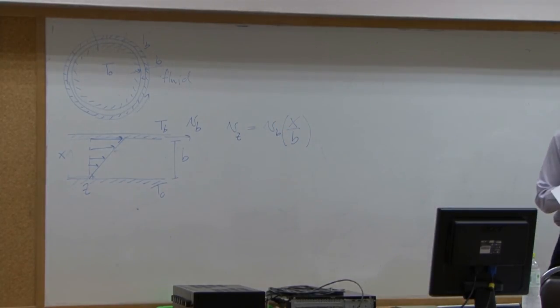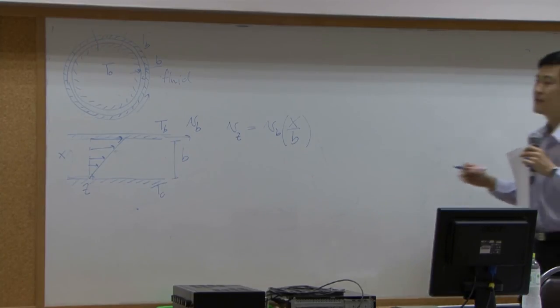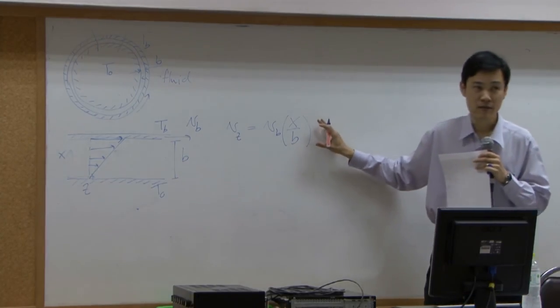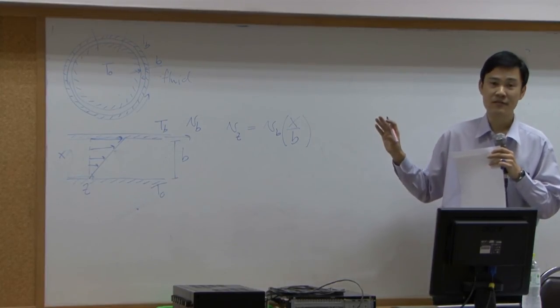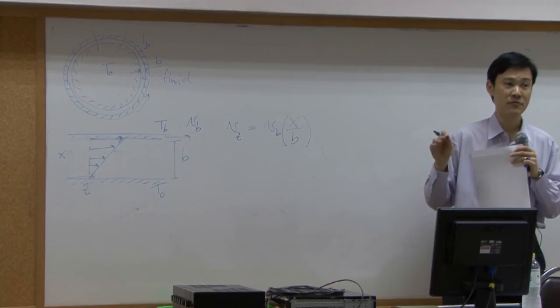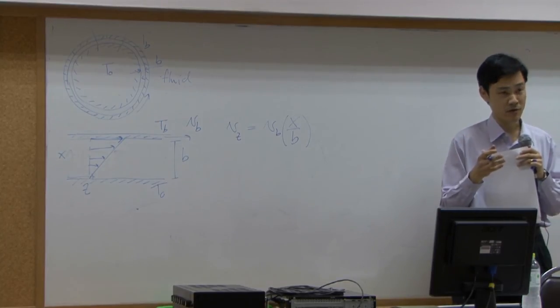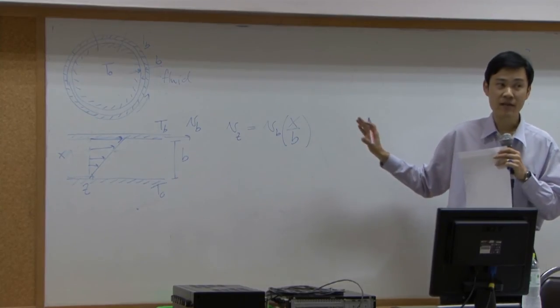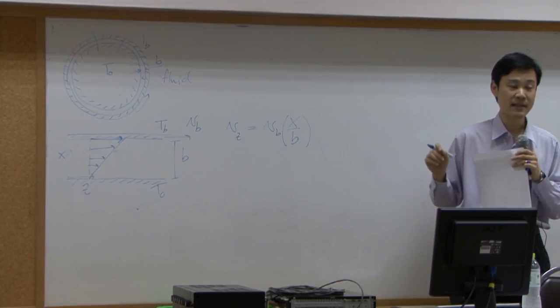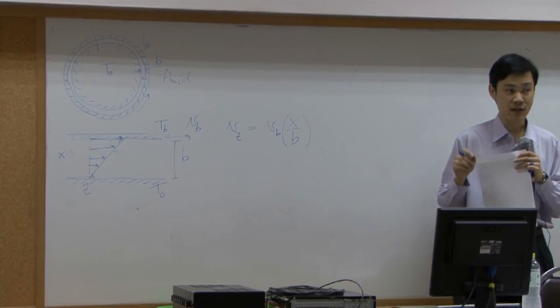Now, let me ask you this. This velocity profile was obtained under the procedure that you have learned in momentum part. That means it was done under assumption of constant density and constant viscosity.